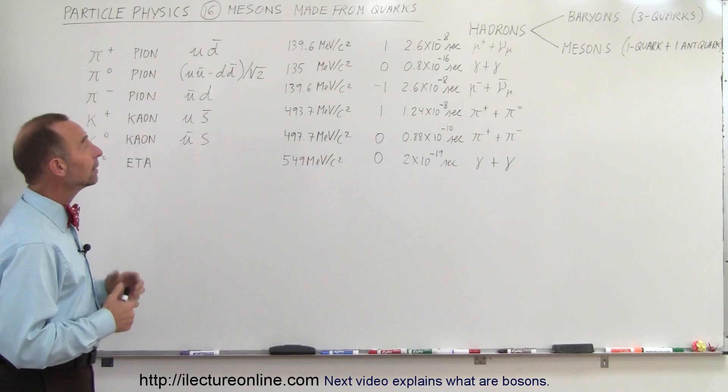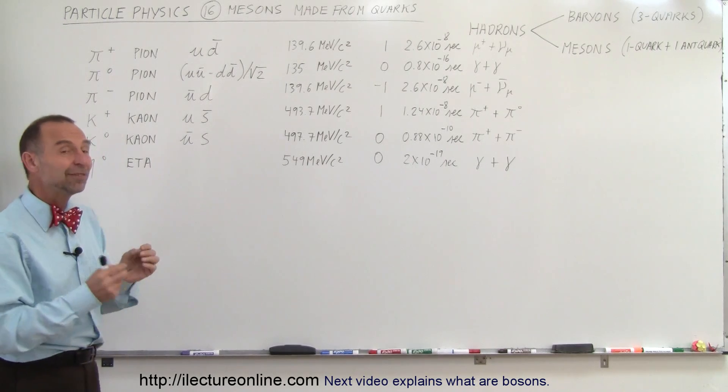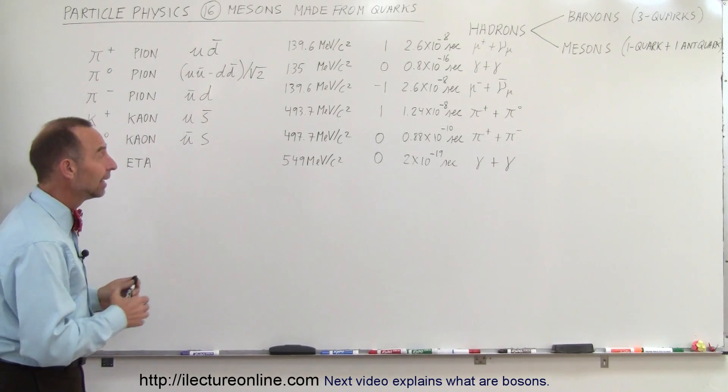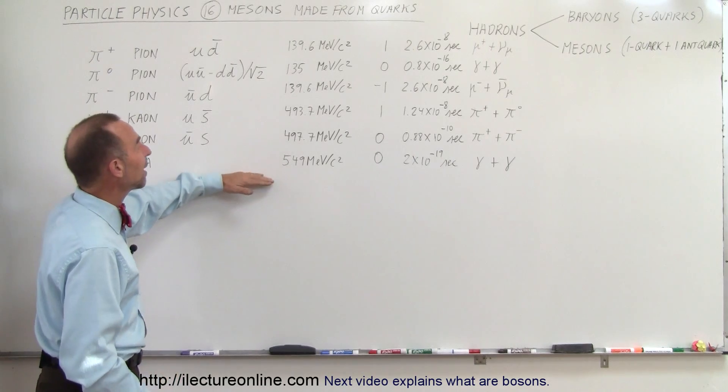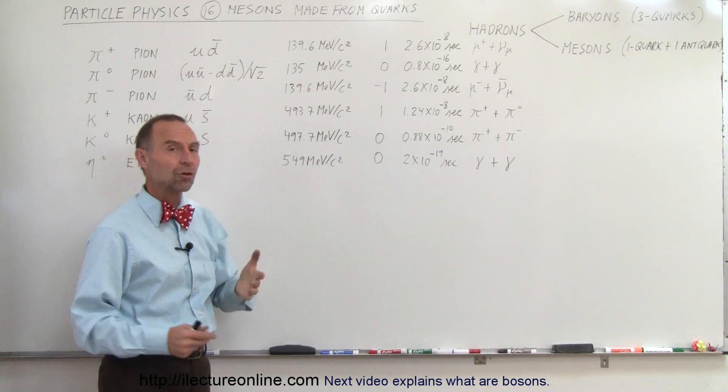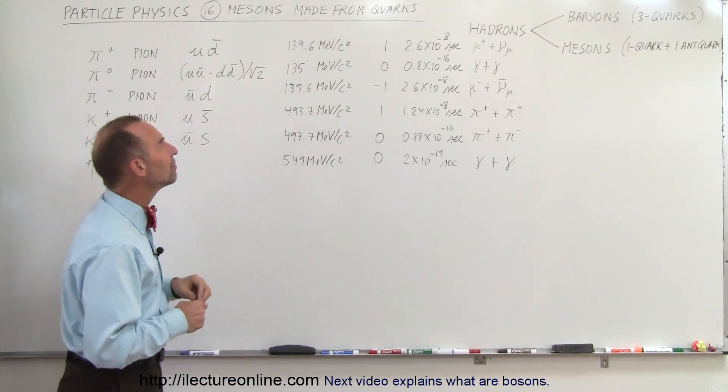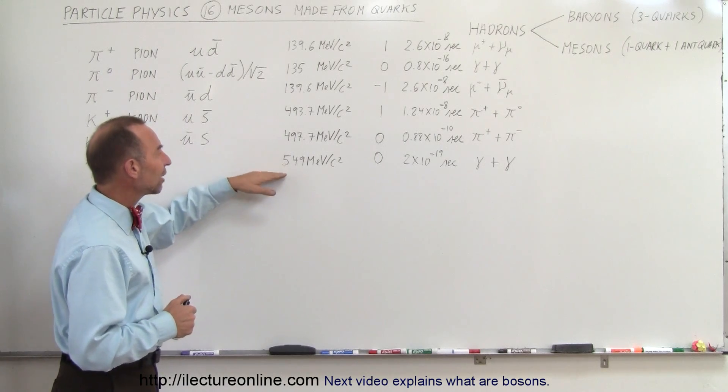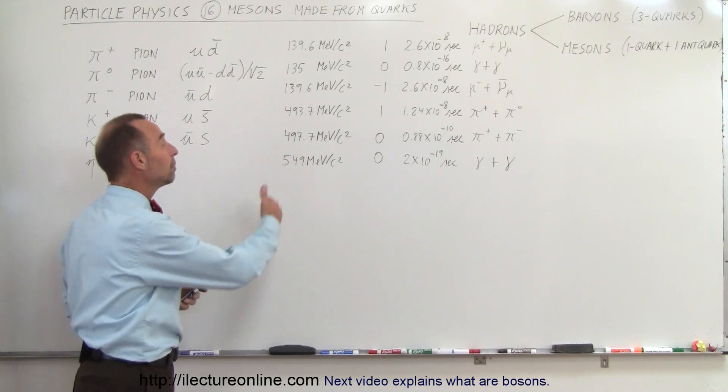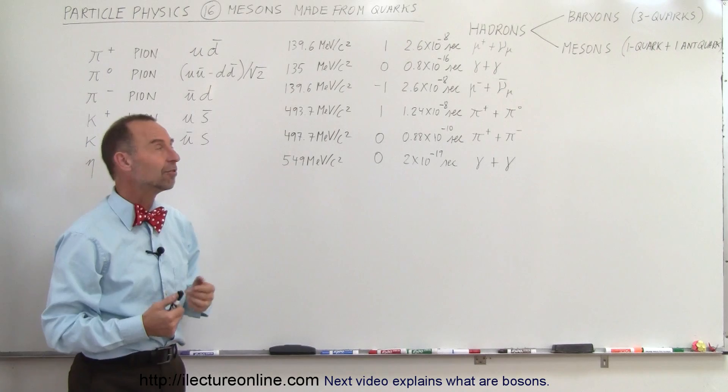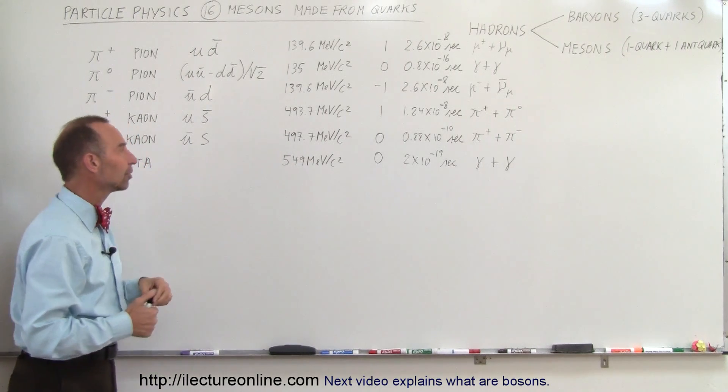So now looking at the masses associated with these particles, even though they don't last for very long, they do have a mass, and notice that the mass falls somewhere between the mass of an electron, which is about a half a MeV, and then the mass of a proton neutron, which is almost a billion or almost a thousand MeV. So that's why they're called mesons, middle-sized particles.